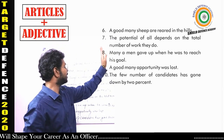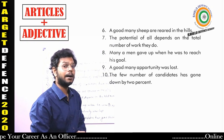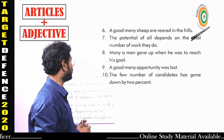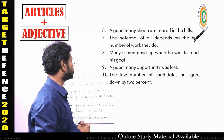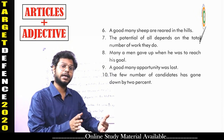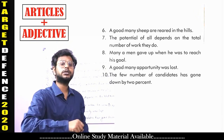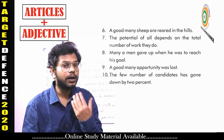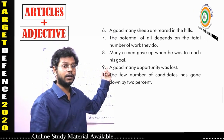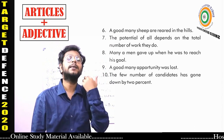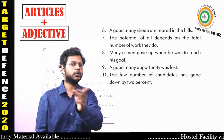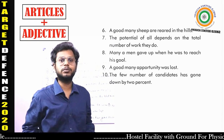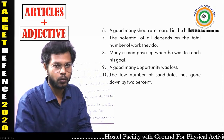Question 8: 'Many a men gave up when he was to reach his goal.' By now you know the rule — after 'Many a,' the next word must be singular. 'Men' is plural; it should be 'man.' Correct: 'Many a man gave up when he was to reach his goal.'